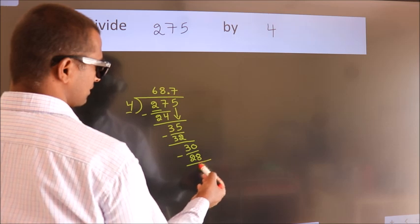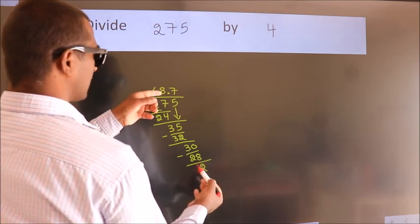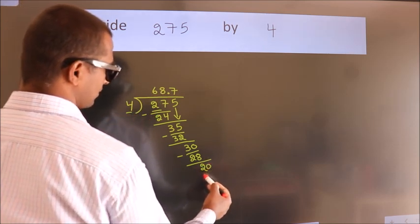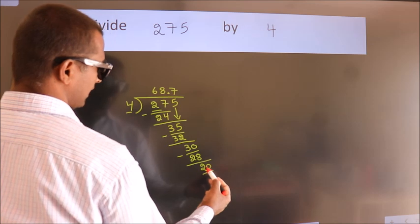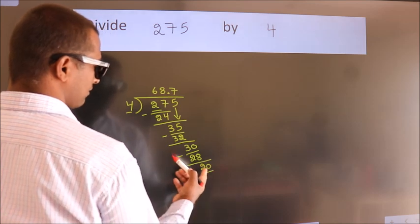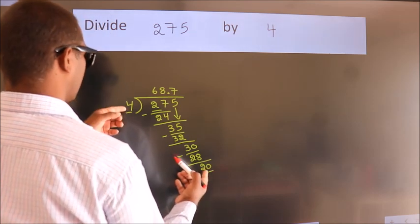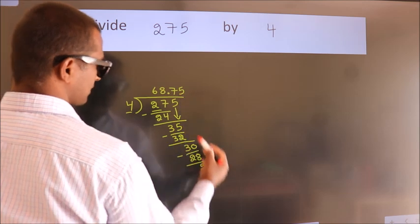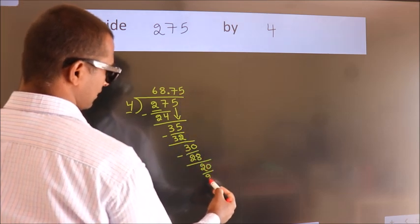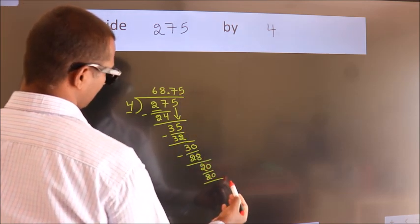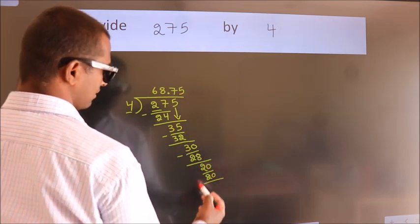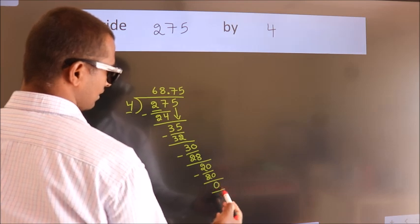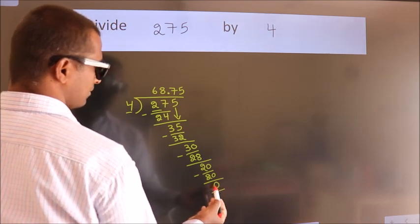After this, we already have the decimal, so directly take 0, giving us 20. In the 4 times table, 4×5 = 20. Now we subtract and we get 0. We got remainder 0, so this is our quotient.